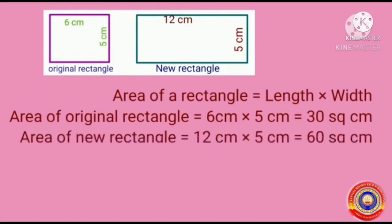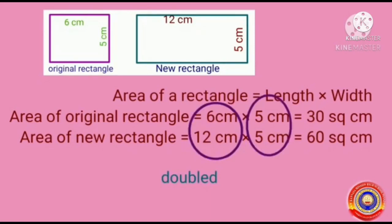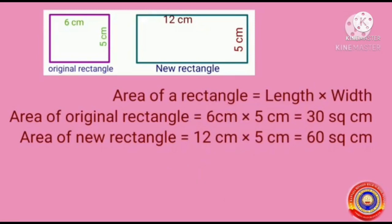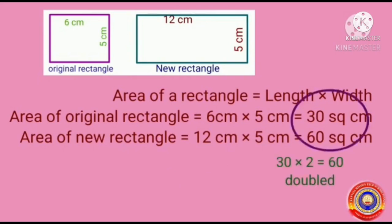Next, find out the area of the new rectangle. Area of the new rectangle equals 12 cm into 5 cm, which is equal to 60 square centimeters. Here, the length of the new rectangle is doubled, that is increased by 2 times, and there is no change in the width. Area of the new rectangle equals 60 square centimeters. See, 30 into 2 equals 60 — that is, the area is also increased by 2 times.